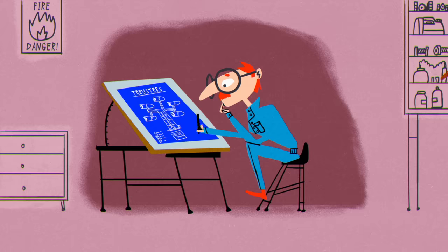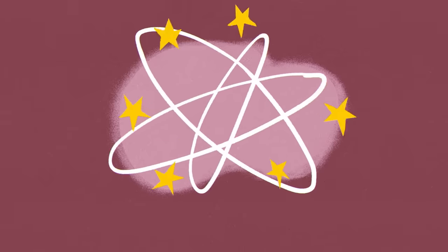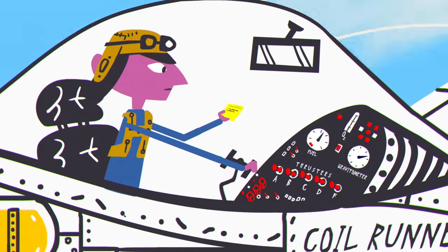However, Uncle Slate never got around to pinpointing which thruster was responsible for which error. All you have are the notes from his test runs.